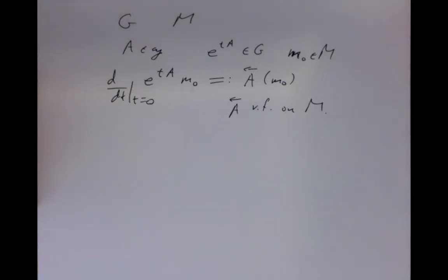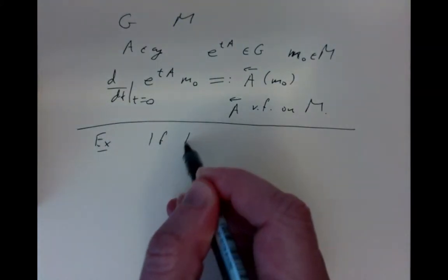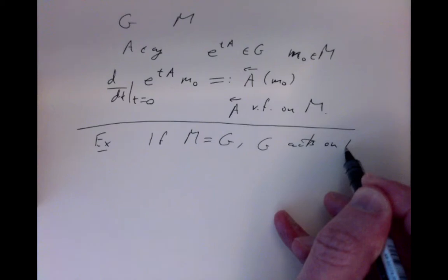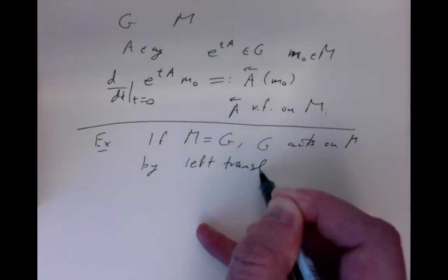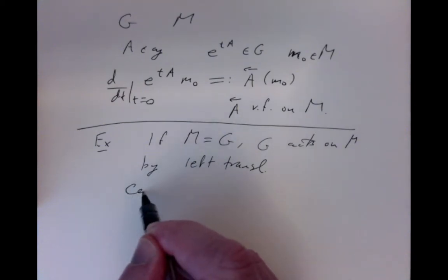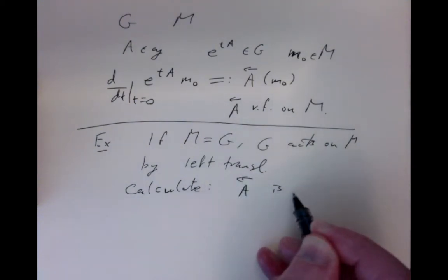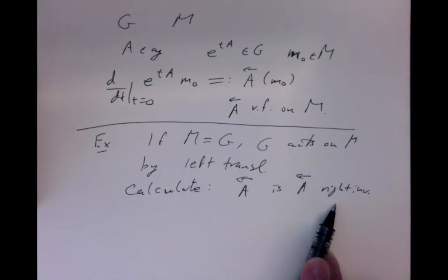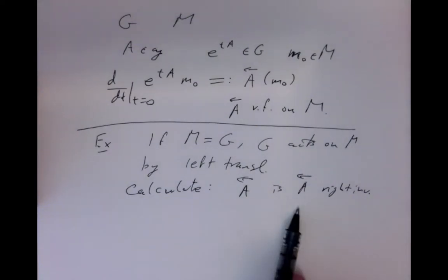Let's work out an important abstract example. If we take M to be G itself, then G acts on itself by left translations. We can calculate that the resulting vector field is the same as the right invariant vector field we had before, because the right invariant vector fields generate the left action, and the left invariant vector fields generate the right action.